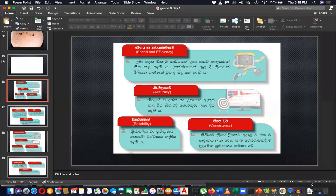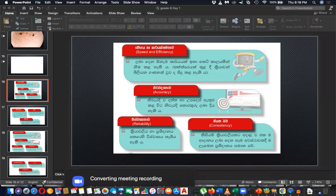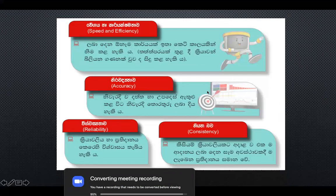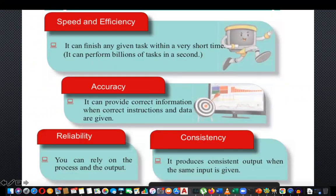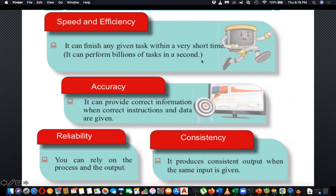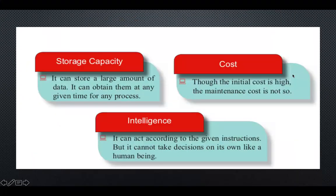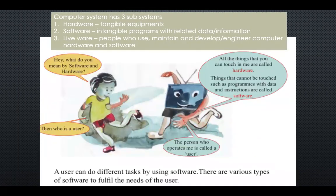Last day we discussed about the features of computing systems — speed, efficiency, not getting tired, accuracy, consistency, reliability, storage capacity, cost, and intelligence. Today what we have to discuss is about the components of the computer system.